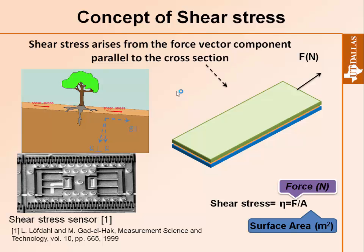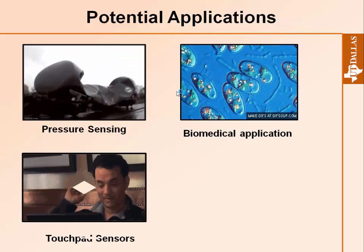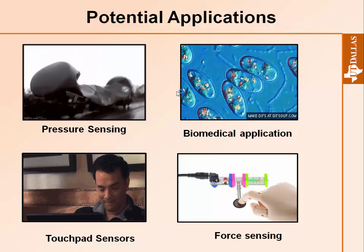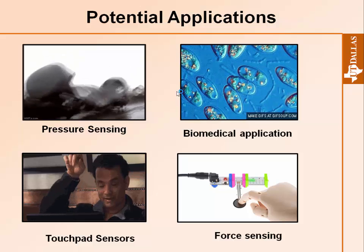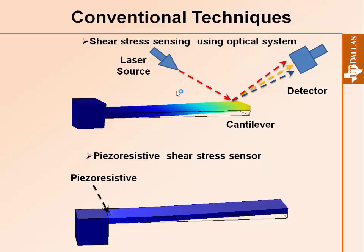The shear stress formula describes not just layer deposition or growth — in fact, every element that makes a force parallel to the surface will be included as a shear stress source. This is a shear stress sensor being used for flow sensing. The potential applications of shear stress sensors include pressure detection, biomedical applications, and wristband sensing.